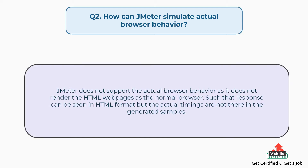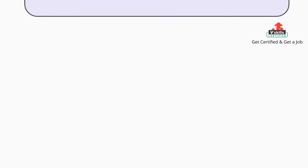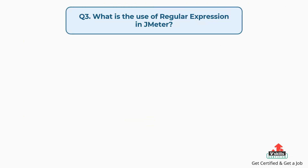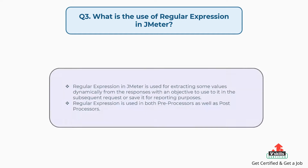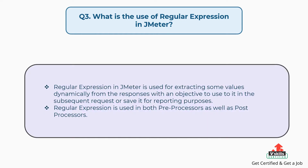Question 2: How can JMeter simulate actual browser behavior? JMeter does not support actual browser behavior as it does not render HTML web pages. The response can be seen in HTML format, but the actual timings are not present in the generated samples.